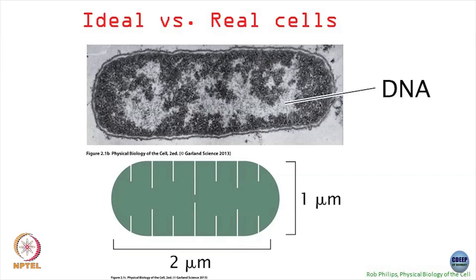Before I start, just to remind ourselves again — this is again some slides from the first or second lecture. The inside of the cell, for example E. coli, looks something like this: it is extremely crowded. The white things were the DNA, the black things were everything else — there is not a lot of free space inside the cell.